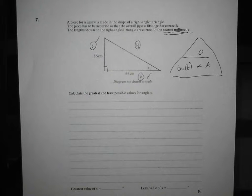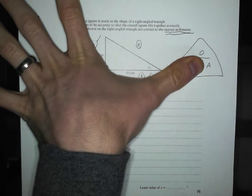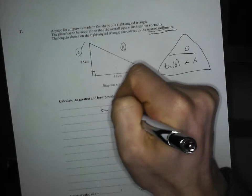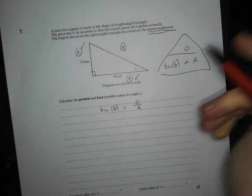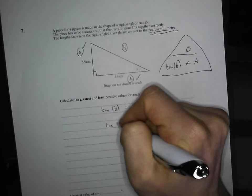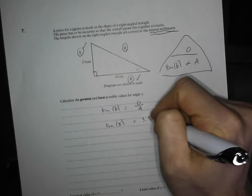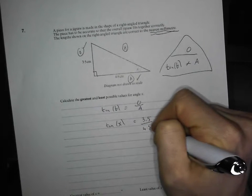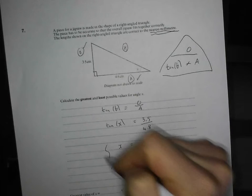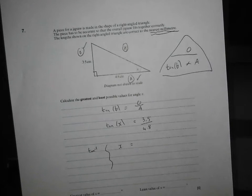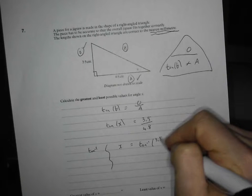And if I cover up what I'm trying to work out, put my thumb over tan and it tells me to do O divided by A. It tells me that tan theta equals O divided by A. And in this case, let's just fill it out. So that's tan x, because my angle's called x. My opposite is 3.5 and my adjacent is 4.8. And if I just finish this particular bit off, if I want to work out what x is, I've got to do tan to the minus one of both sides, the inverse. So that tells me it's tan to the minus one of 3.5 divided by 4.8.